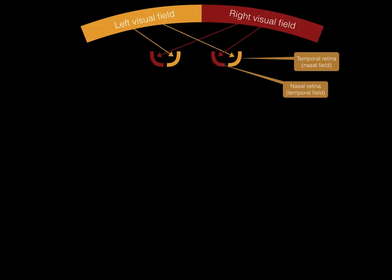We have reached our first important concept: the retina receives visual input from the opposite visual field. So if an object is in our left visual field, the left eye nasal retina and the right eye temporal retina process the image. The reverse is true if the image is in the right visual field. If we take into account both the left and right visual fields simultaneously, it looks like this.